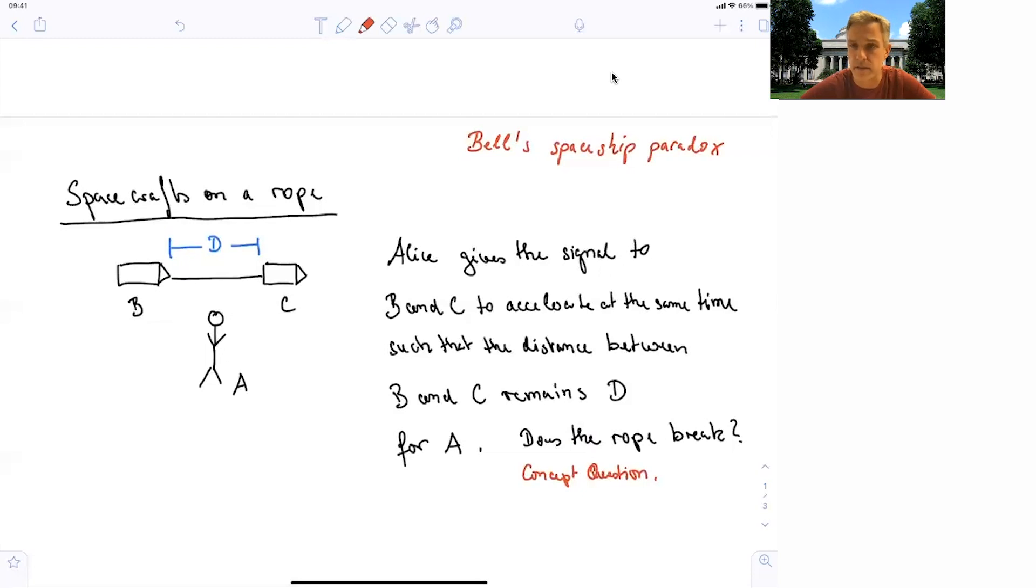So now Alice gives a signal to both spacecraft simultaneously in her reference frame to accelerate at the same time such that the distance between B and C remains constant.